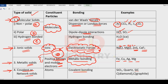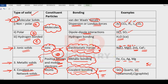Covalent solids are network solids. The constituent particles are atoms and the bonding present is covalent bonding — either a sigma bond or a pi bond. Examples: silicon dioxide has got a giant structure — SiO₂ repeated n times — also called quartz. Then silicon carbide, diamond, and graphite are also examples. Both diamond and graphite are made up of carbon.